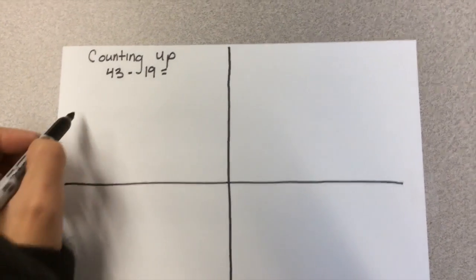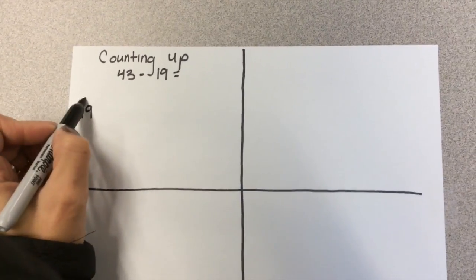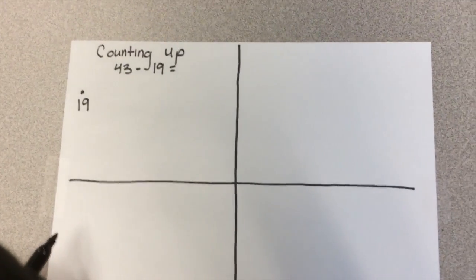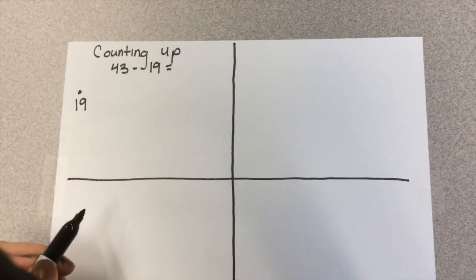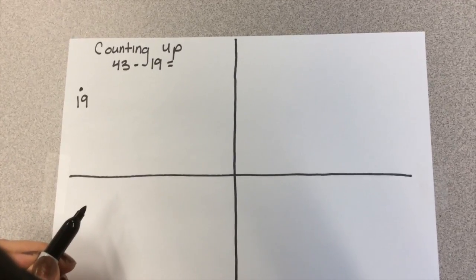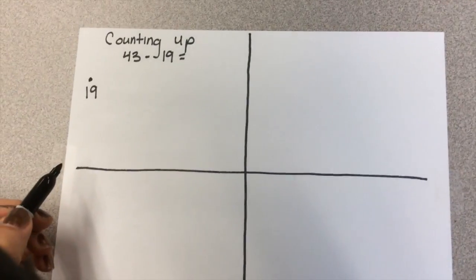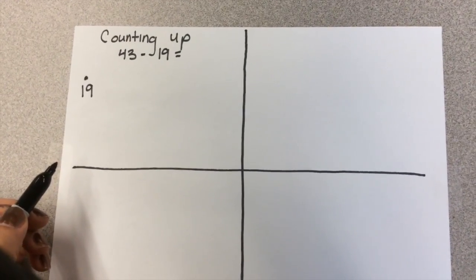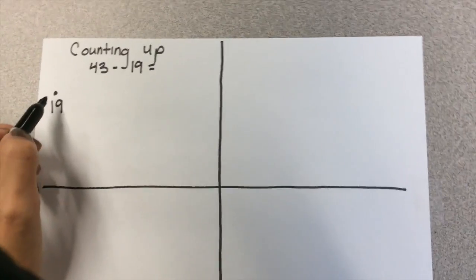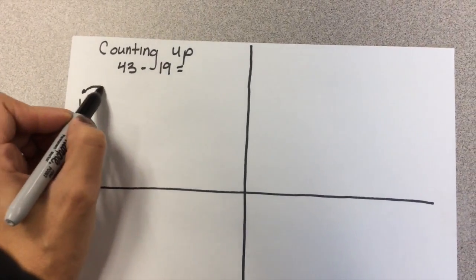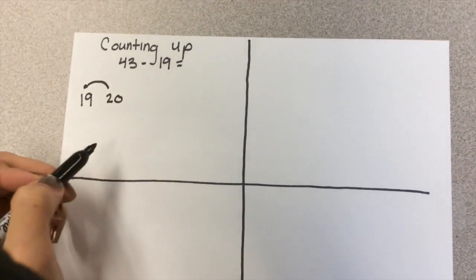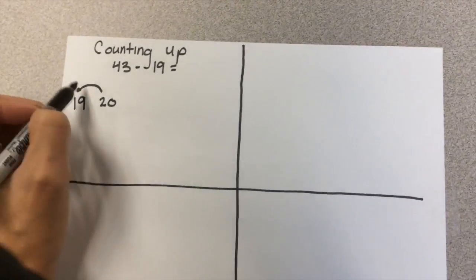We start with 19, and we're going to go from 19 and try to get to 43. So we ask ourselves what's the next friendly number. Friendly numbers consist of typically numbers counting by 10: 10, 20, 30, 40, 50. So from 19, we would jump to 20, and then we would ask ourselves how many did we jump? One.